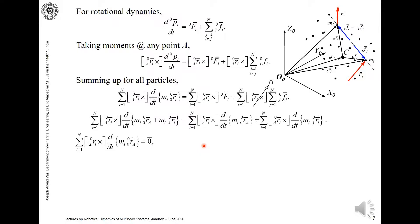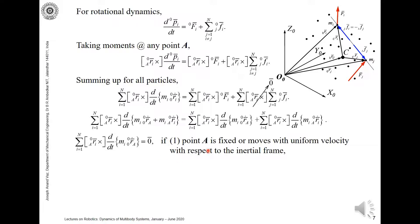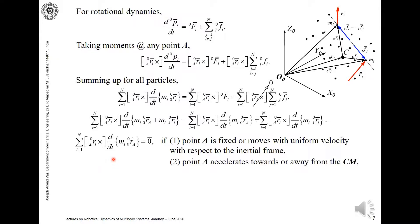The first term on the right-hand side becomes zero under three conditions. The first condition is that point A is fixed or moves with uniform velocity with respect to the inertial frame — meaning the acceleration of A is zero. The second condition is when point A accelerates towards or away from the center of mass, which makes this particular cross-product term become zero. When you multiply that term by m-i and take it across, you are left with the rate of change of velocity, which is the acceleration, and the summation of m-i times r-cross of i with respect to A.